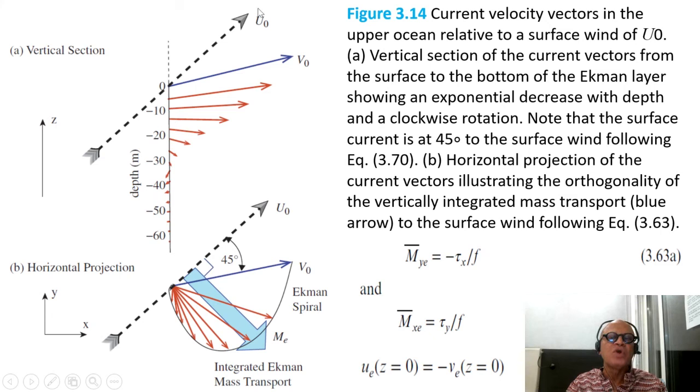If you look in the vertical section, you have wind blowing U₀ produces current at an angle which drags the water below, below, below and actually at the bottom you can get winds going opposite to the direction of the surface winds. Again, remember this is idealized. If you integrate over this Ekman layer where the currents go to zero, the horizontal projection would look like this. So this is what we call the Ekman spiral and this is why you get integrated transport at right angles to the winds themselves.